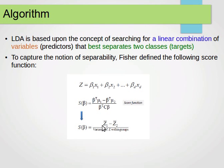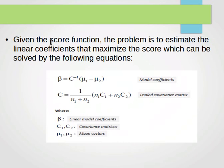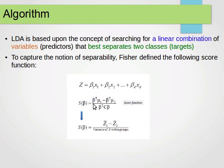It can be represented as the score of beta equals z1 bar minus z2 bar over the variance of z within groups. I'll explain what this means in a second. Given that score function, the problem becomes a problem of estimating the linear coefficients, finding these betas. By the way, this bt here is the transpose of beta. Beta is a vector and we do the transpose. I hope you know what a transpose of a matrix or a vector is - you just turn the rows into columns and the columns into rows.